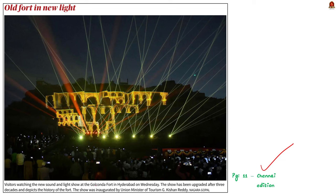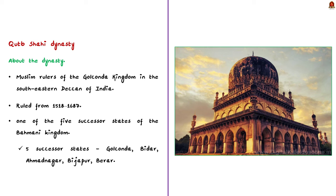The show at Golconda Fort has been upgraded after three decades and depicts the history of the fort. In this background, let us discuss a few points about the Qutb Shahi dynasty from a prelims perspective. The Qutb Shahi dynasty refers to the Muslim rulers of the Golconda kingdom in the south-eastern Deccan of India. They ruled from 1518 to 1687.